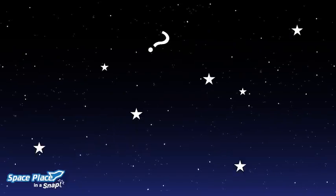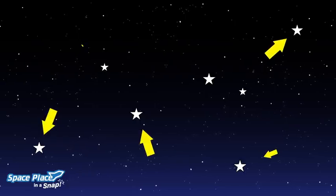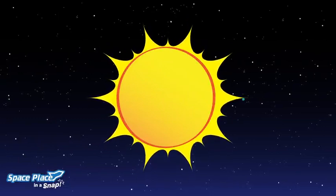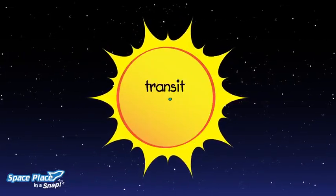So how do we find planets that could be homes for living things? We look at stars. We watch other stars closely to see planets pass in front of them. When a planet crosses in front of a star, it's called a transit.